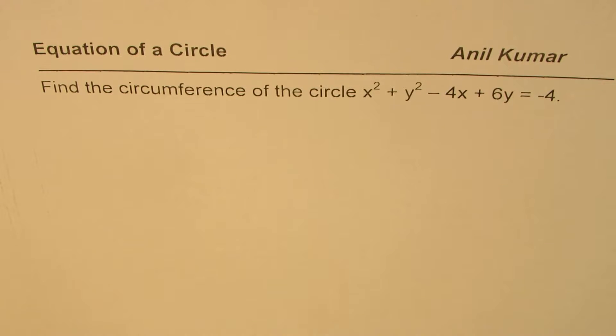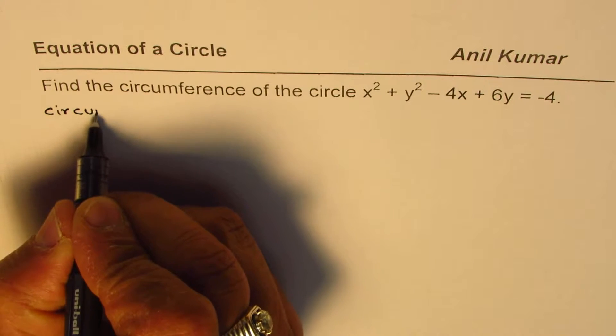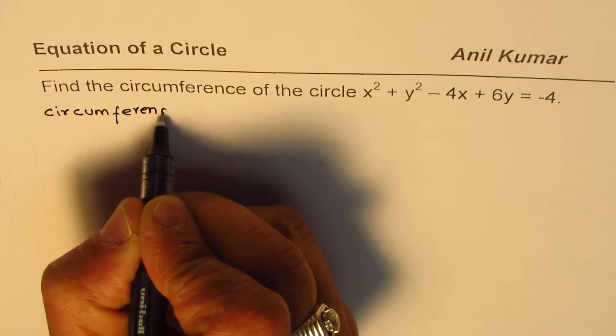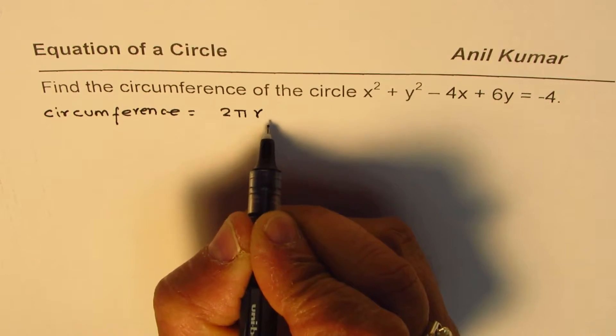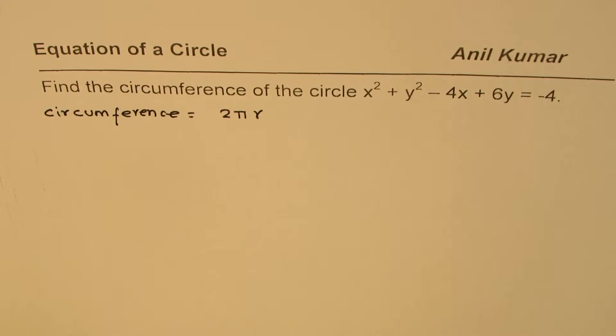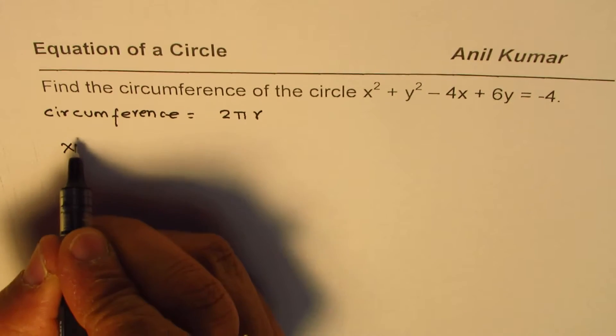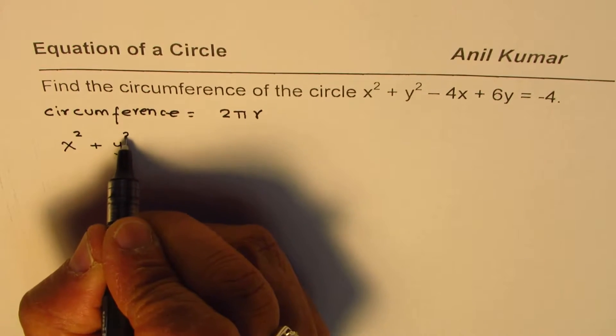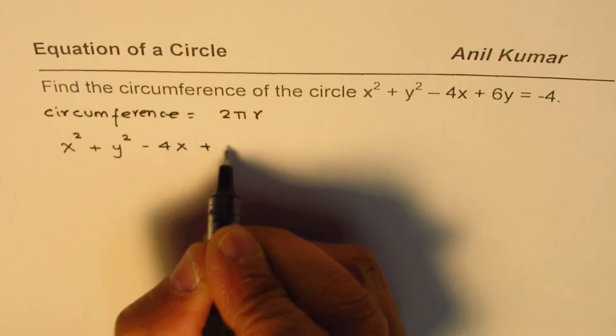Let us see how to solve this. We know circumference for a circle is given by the formula 2 pi r, where r is the radius. So from the given equation we need to find the radius. Let's begin by completing the square so that we can write it in a form from where we can easily read the radius.